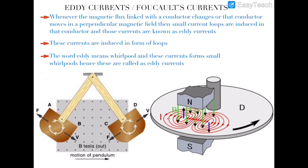Due to its motion, eddy currents are induced in this disc in the form of loops. This part of the disc is going away from the magnetic field and this part is coming inside the magnetic field. The eddy currents have a nature that they oppose the cause of their induction, similar to induced EMF. So these eddy currents will oppose the rotation of the disc, since the disc's rotation is the cause of their induction.